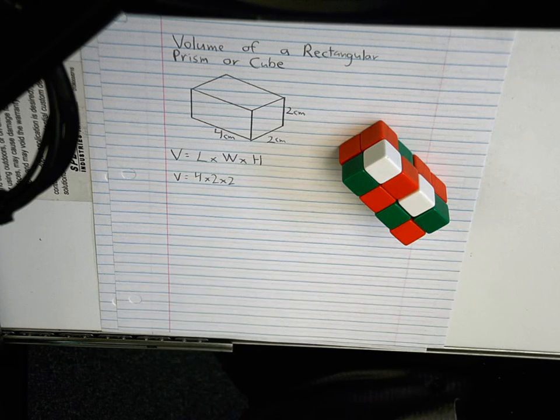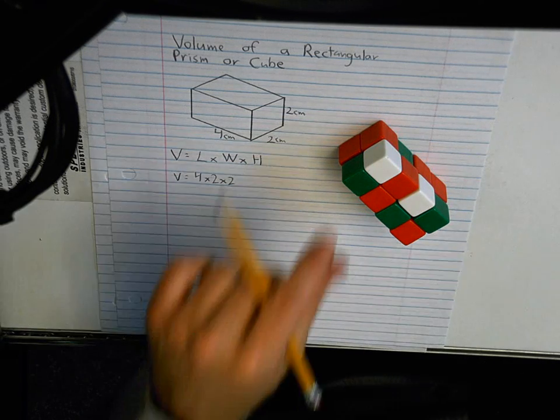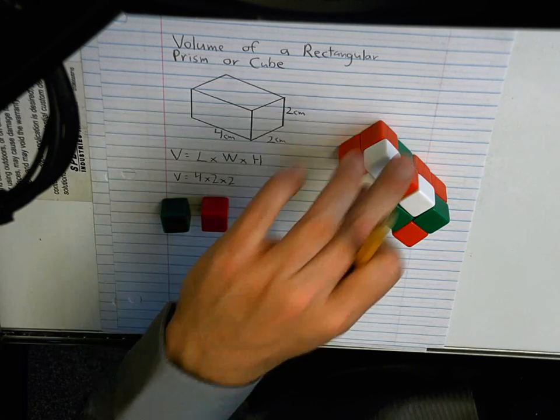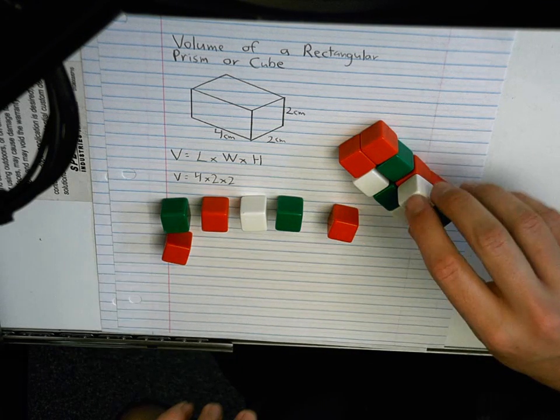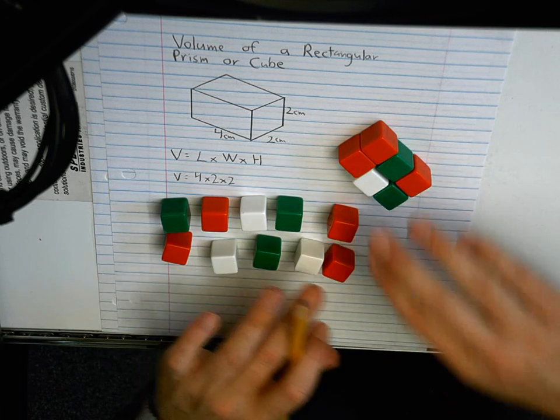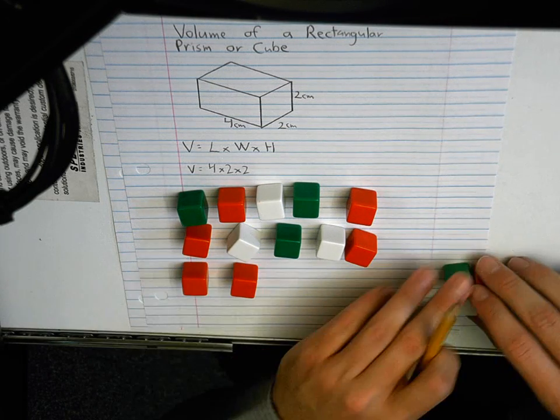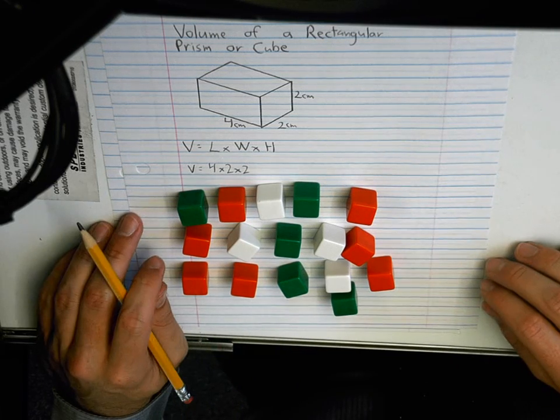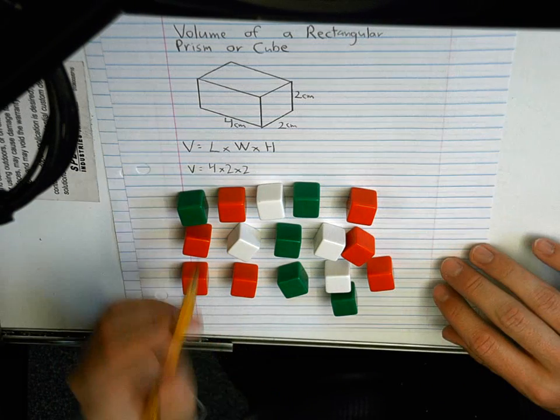I'm going to take this solid shape that I made. I'm going to take it apart and see how many units, how many cubic centimeters it was. I have one, two, three, four, five, six, seven, eight, nine, ten, eleven, twelve, thirteen, fourteen, fifteen, sixteen. So right now, when I built it, when I filled it up, I have sixteen cubes here. So that the volume of this is sixteen cubic centimeters.